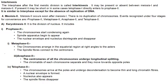Interkinesis is the phase after the first meiotic division. It may be present or absent between meiosis I and meiosis II. If present it may be short, or in some cases telophase I directly enters prophase II. It is similar to interphase except for the absence of DNA replication. Meiosis II occurs soon after meiosis I with no duplication of chromosomes, and its events are recognized under four stages: prophase II, metaphase II, anaphase II, and telophase II.